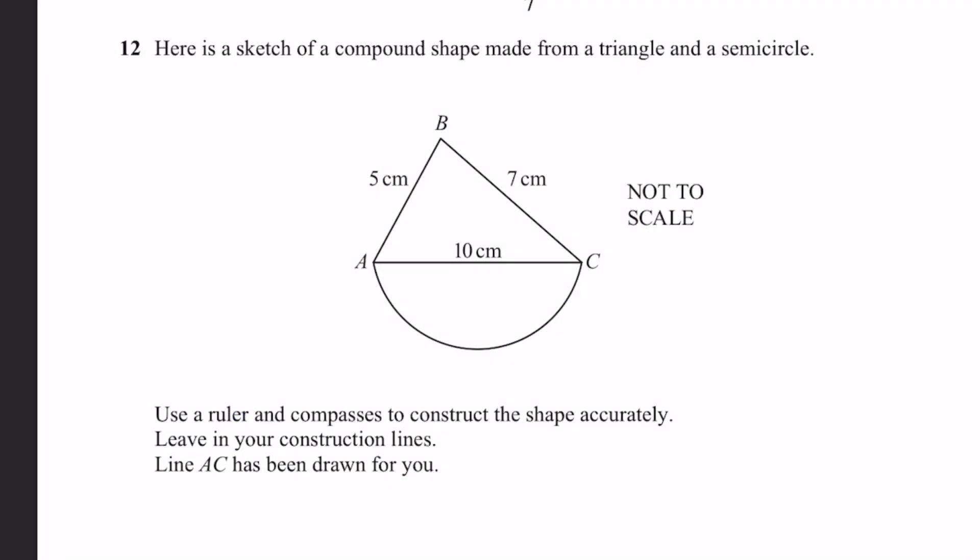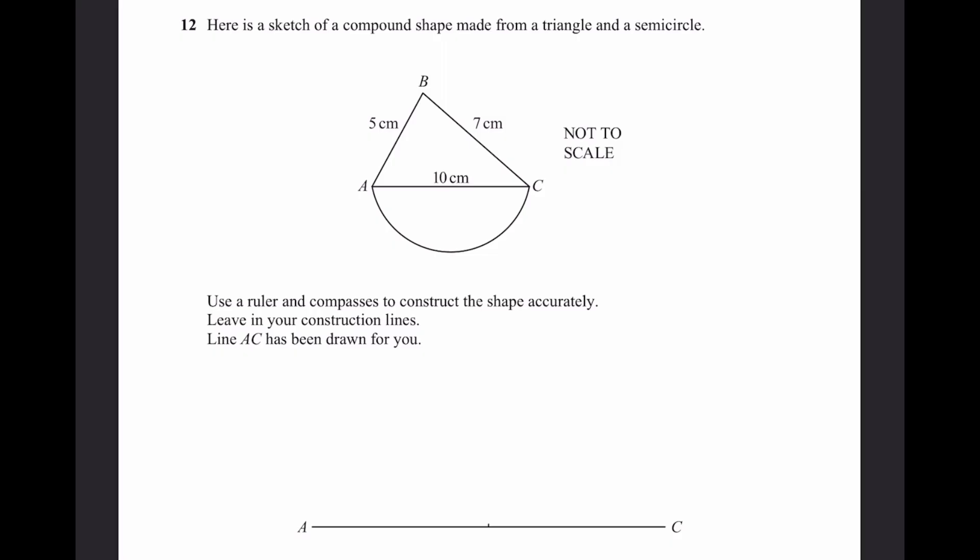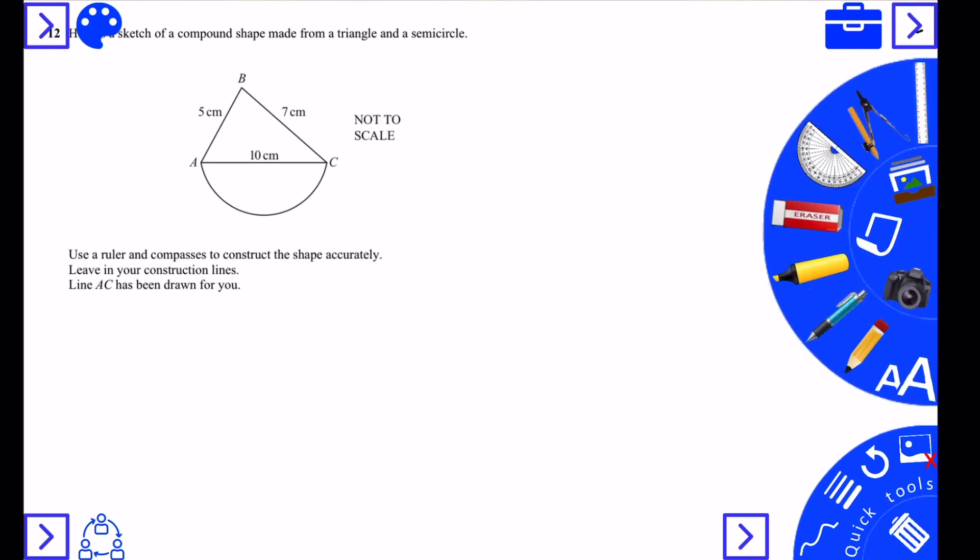Question 12. Here is a sketch of a compound shape made from a triangle and a semicircle. Use a ruler and compass to construct the shape accurately, leaving construction lines. Line AC has been drawn for you. I'll redraw line AC — taking a line of 10 centimeters using the ruler.